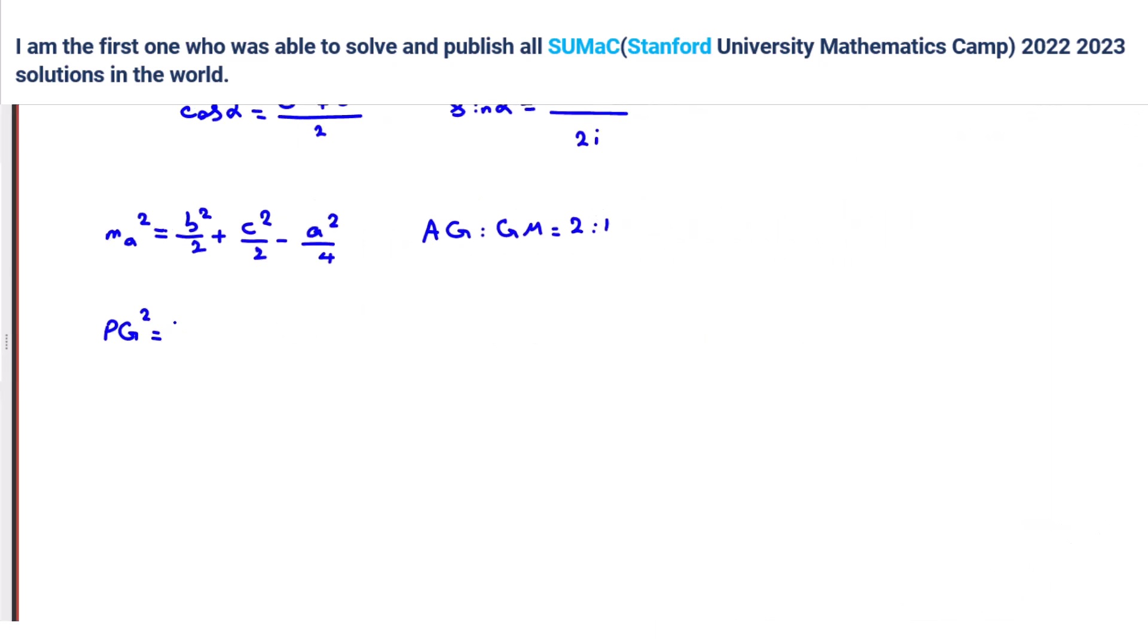One-third PA squared plus PD squared plus PC squared, minus one-ninth A squared plus E squared plus C squared.